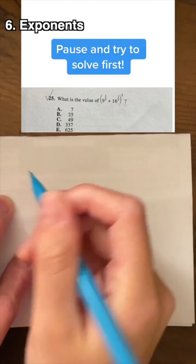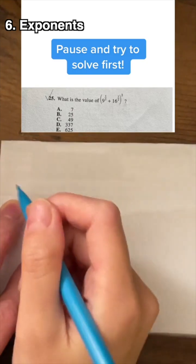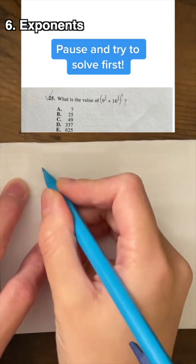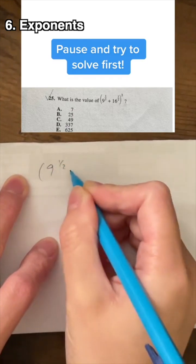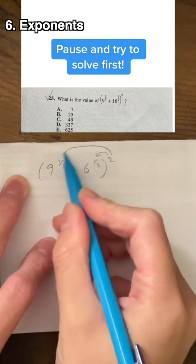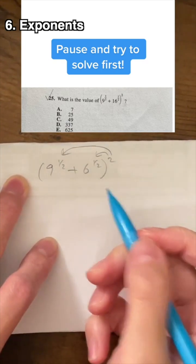Students will often get tricked by the SAT or ACT because of the time crunch, and the test tries to trick you or make some error. So in this case, do not just distribute this 2 because that's not the way that algebra works.